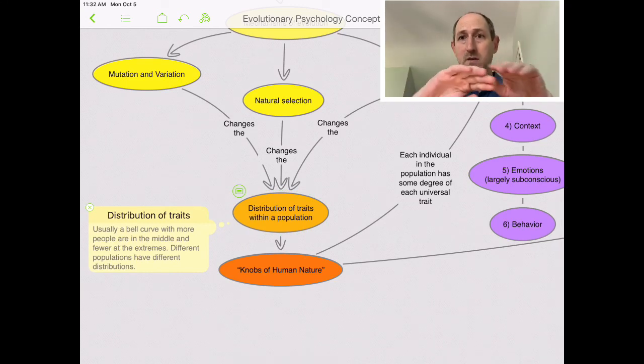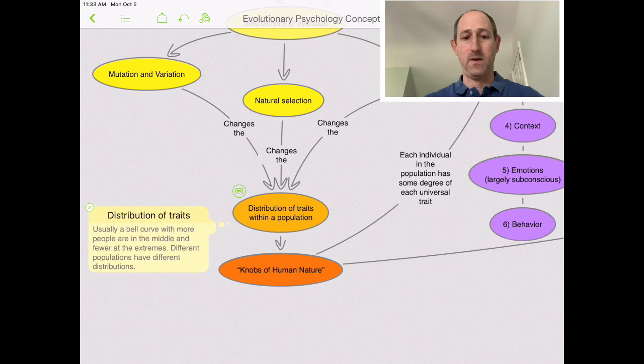Usually it's a bell curve, which looks like that, like the big hump in the middle and fewer at the ends, where most of the people, in this case we're talking about people, are in the middle of the trait of some sort. And then there's fewer people at the edges.